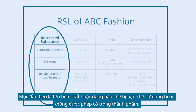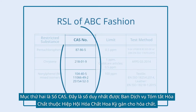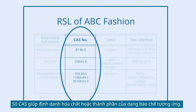The first item is the name of the restricted chemical substance or formulation which is restricted in use or not allowed to be detected in the end product. The second item is the CAS number — a unique number assigned by the Chemical Abstracts Service of the American Chemical Society. The CAS number helps to identify the respective chemical substance or components of the formulation.